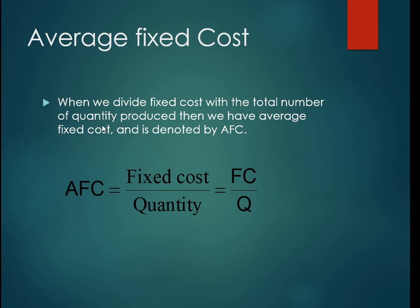Average fixed cost is when we divide fixed cost by the total number of quantity produced. This is denoted by AFC.